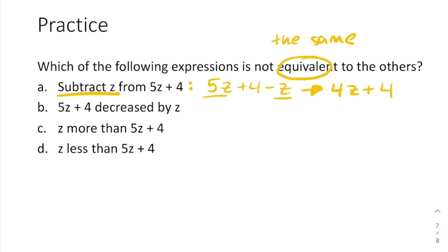Now let's do the same for the next option. 5z plus four decreased by z. Well, decreasing by z means subtract z. So 5z plus four minus z. Well, that's the same thing again, right? Look right above it. That's also going to be 4z plus four.